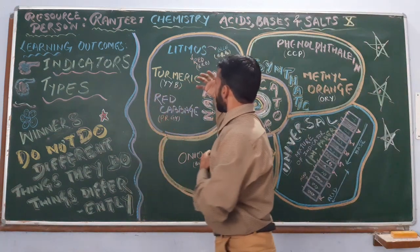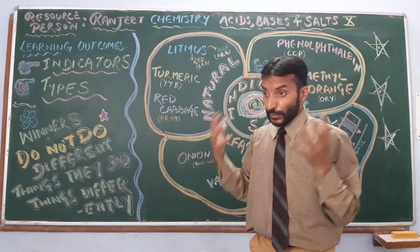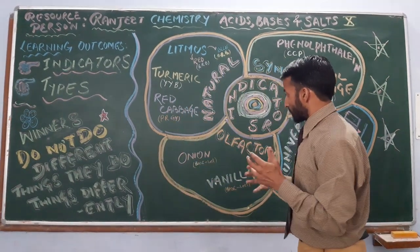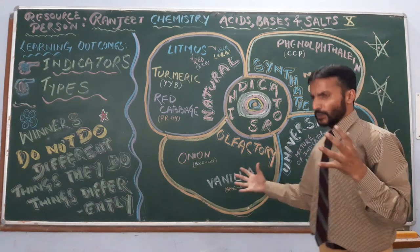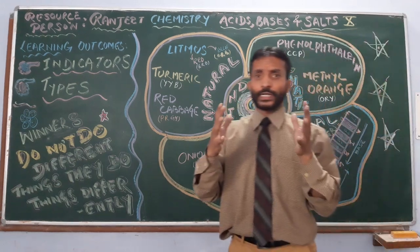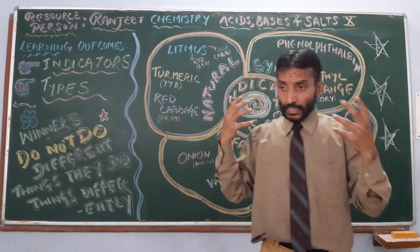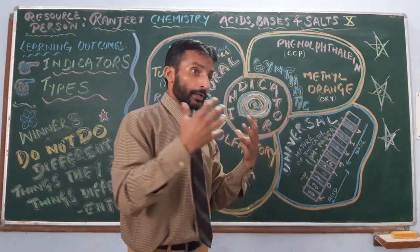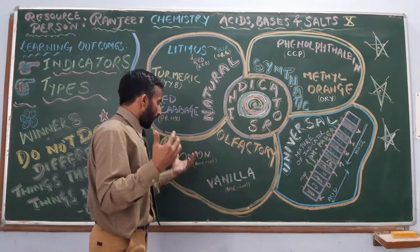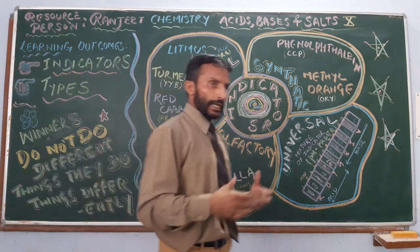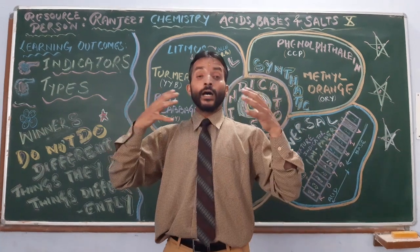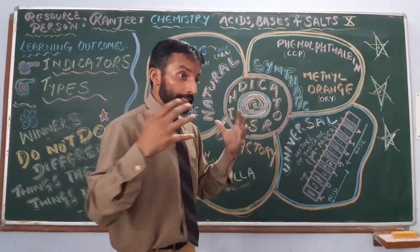This is all about natural indicators — they can be used naturally as indicators. Now let us come to olfactory indicators. These are used for visually impaired students; in laboratory they can judge the acidic or basic environment. We are having clove, onion, and vanilla.